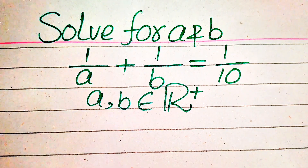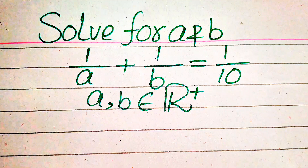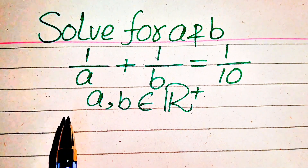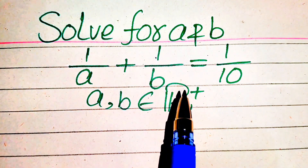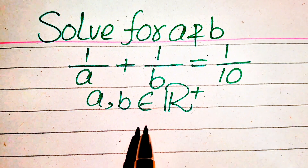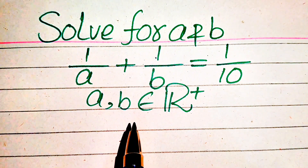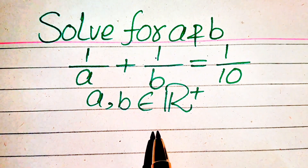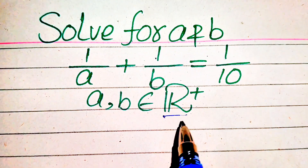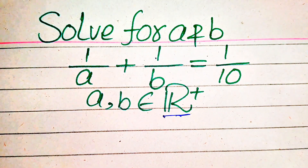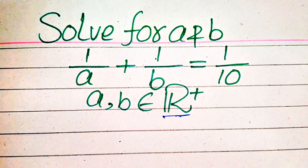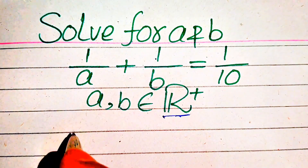Hello everyone. Today I want to show you how to solve this problem for the values of a and b. If we have 1 over a plus 1 over b equals 1 over 10, we solve this problem for the values of a and b. Remember that a and b must be positive real numbers, so we solve for positive real values of a and b.